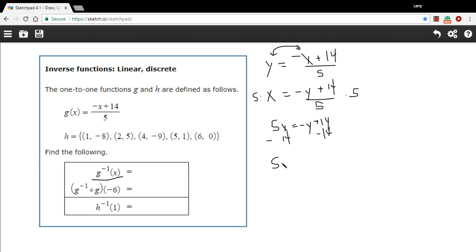So I've got 5x minus 14 equals a negative y, and then I'm going to multiply both sides by negative 1 to make this a positive y. We're going to have y equals a negative 5x plus 14.